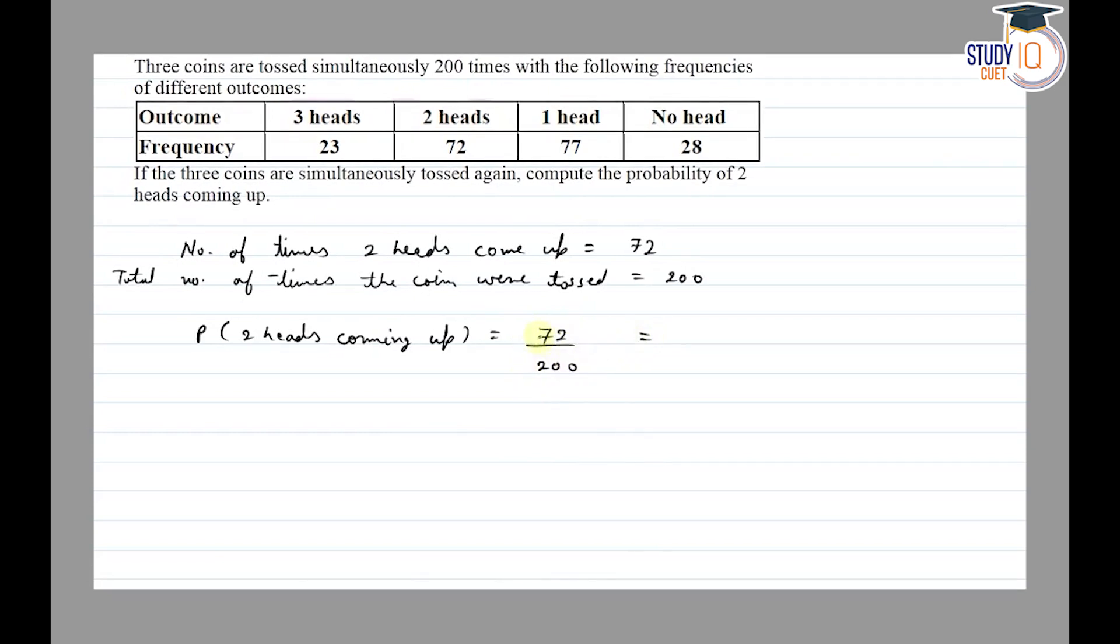If we cancel out, this becomes 9 and this becomes 25. So our probability is 9 by 25. The probability of 2 heads coming up is 9 by 25.